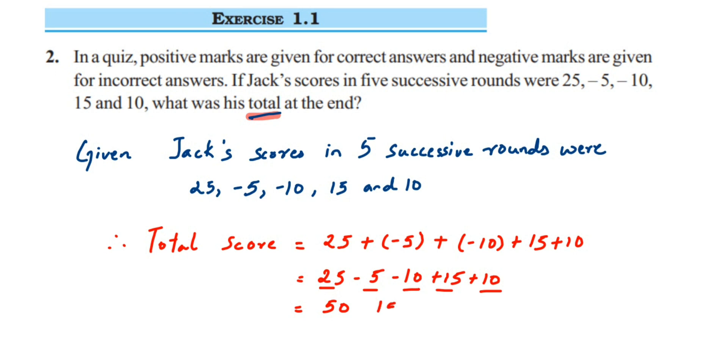Right, now 50 - 15 will be 35. So the total score will be 35. This was a simple question; the only thing is you have to add them. Now in case you have any other questions or doubts, you can drop a comment. Thank you so much for watching.